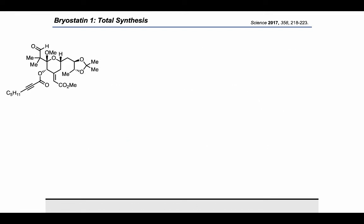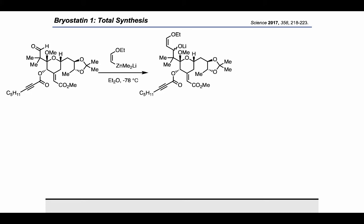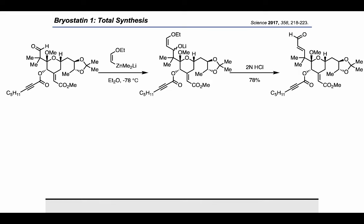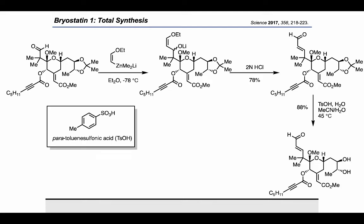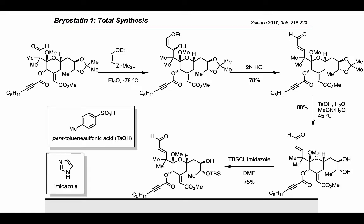With the aldehyde revealed, the authors identified a suitable non-basic organometallic nucleophile to add a two-carbon fragment containing a masked aldehyde. Treatment with HCl resulted in deprotection of the ethyl vinyl ether and formation of an enal. Using tosic acid, the acetonide was removed and one of the secondary alcohols was selectively protected using TBS chloride. With that sequence, the authors made the C-ring fragment in 13 steps with an overall yield of 16%.